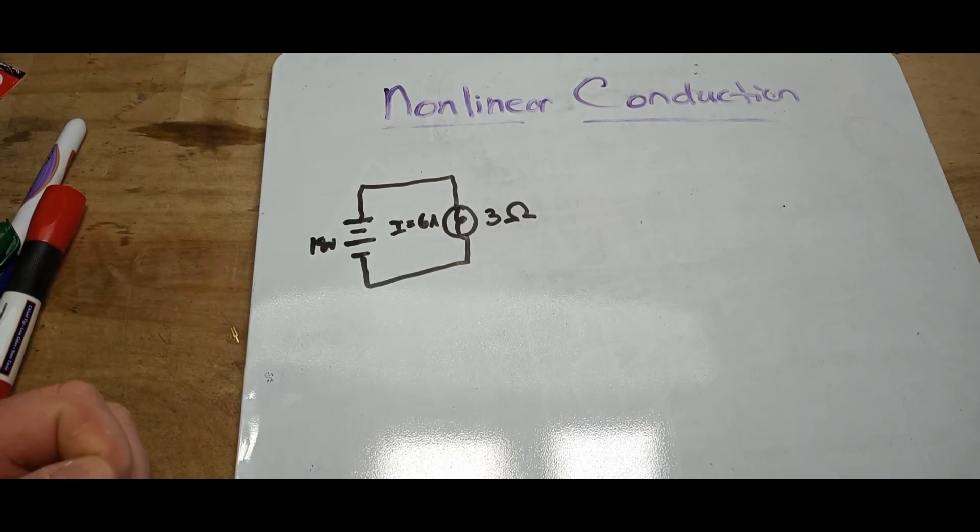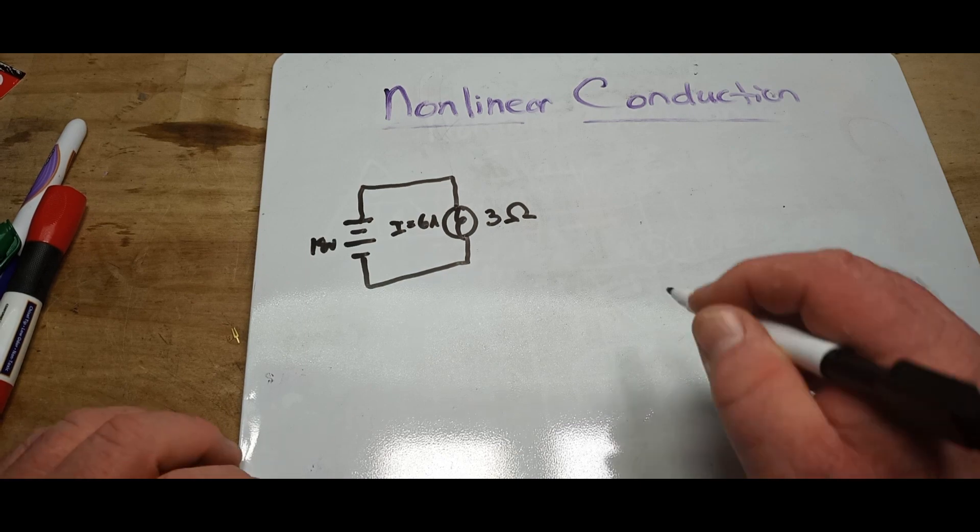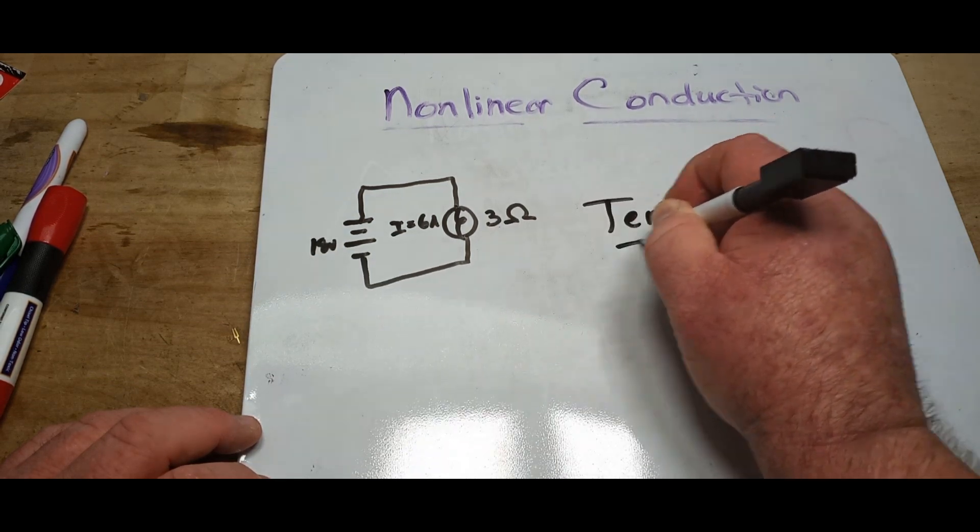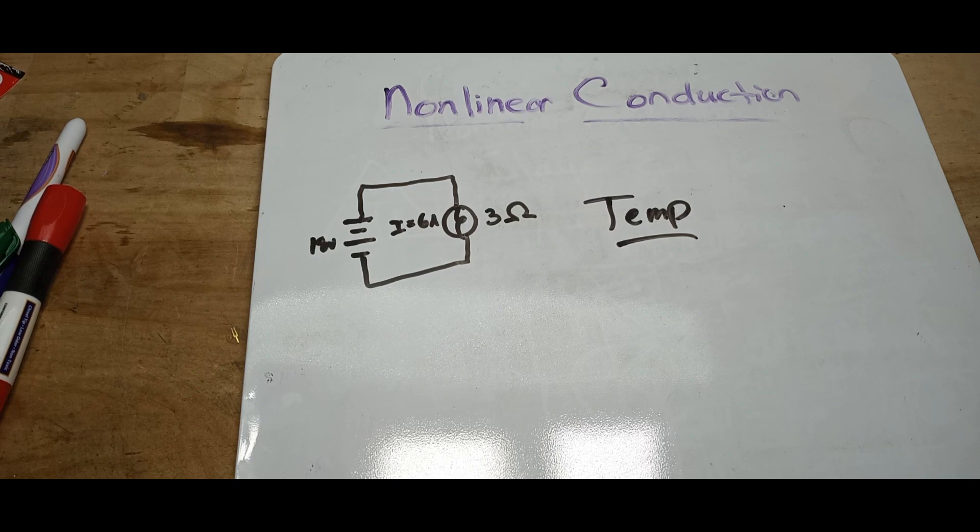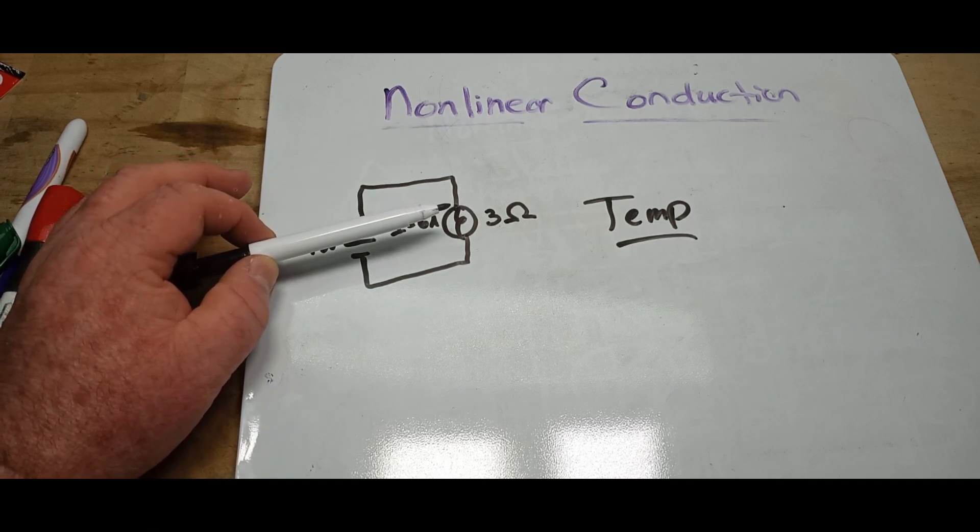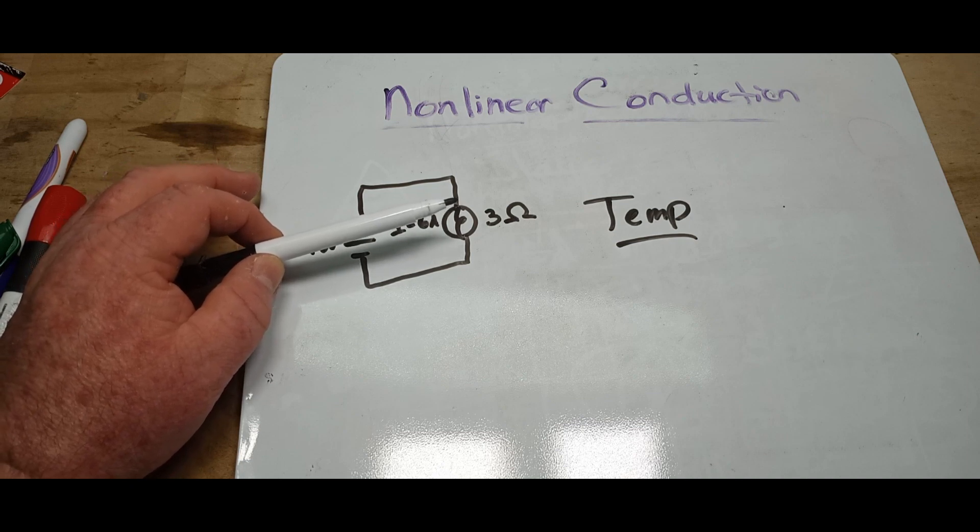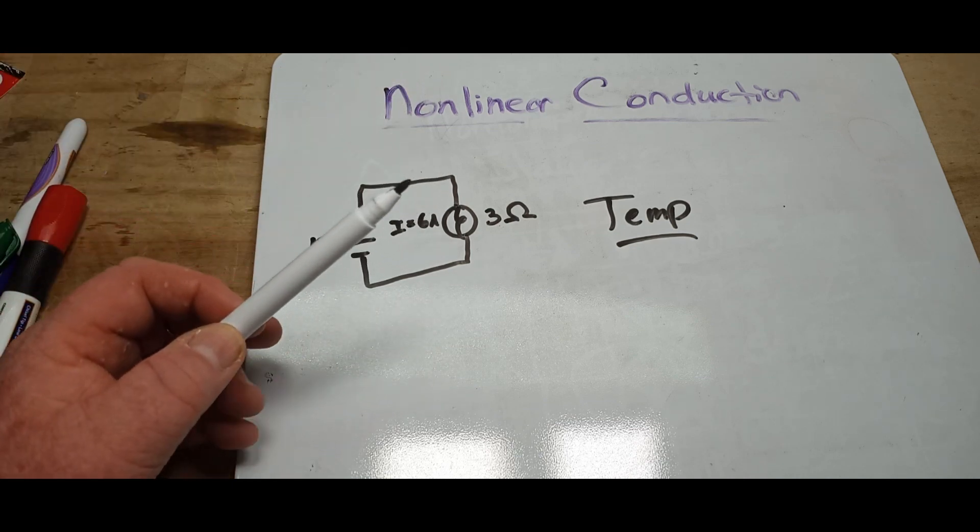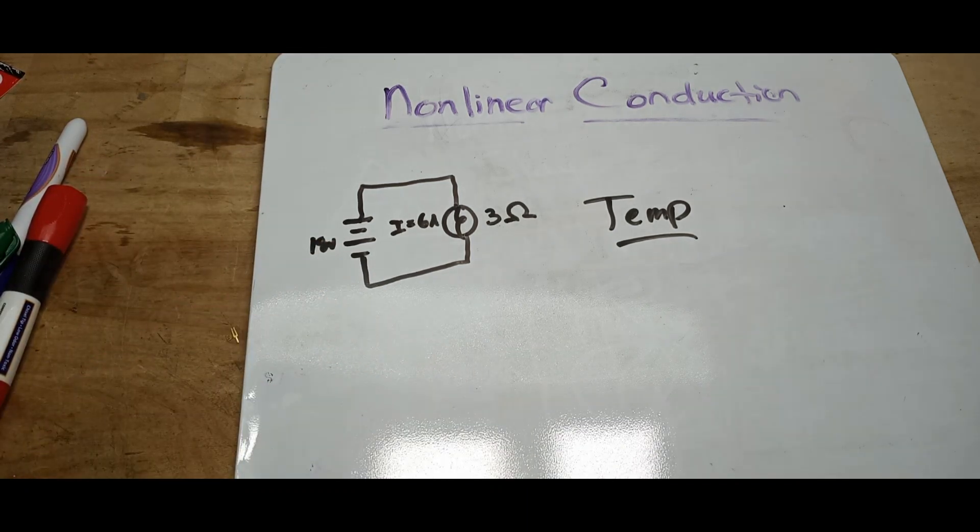But as is usually the case, things are not always that simple, and one of the main things that can cause nonlinear conduction - who knows the answer, anybody? Joey? Temperature. Temperature can change the resistance of items causing nonlinear conduction. In fact, we have components that are built for that such as a varistor. But let's say if this was a real circuit, as this lamp heated up the resistance would increase which would cause the current to increase, which would cause the resistance to increase - boom boom boom, things just keep going up and up and up.